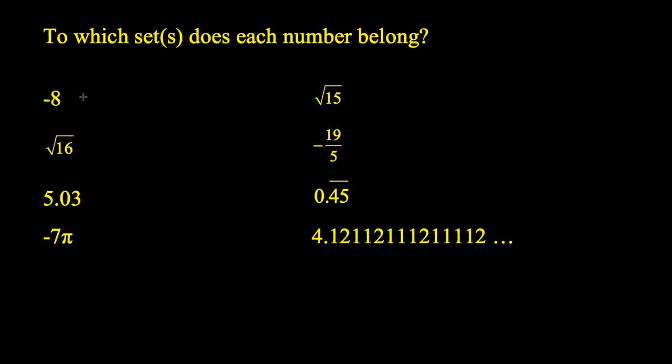So when we look at negative 8 and we consider all of the sets that we have, well, this is for sure in the set of integers. Integers are within Q, so we would include that, and we would also say the real numbers. So negative 8 is an integer, a rational, and a real number.